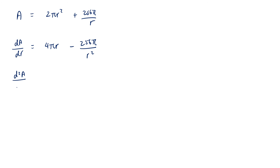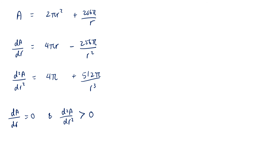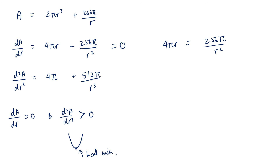The second derivative is d²A/dr² = 4π + 512π/r³. In order to minimize the area, we set dA/dr = 0, because that indicates a turning point, and we want the second derivative to be greater than 0, indicating the curve concaves upward — giving a local minimum. Setting dA/dr = 0 gives 4πr = 256π/r². Cancelling π and solving, we get r³ = 64. Since r > 0, r = 8 centimetres.